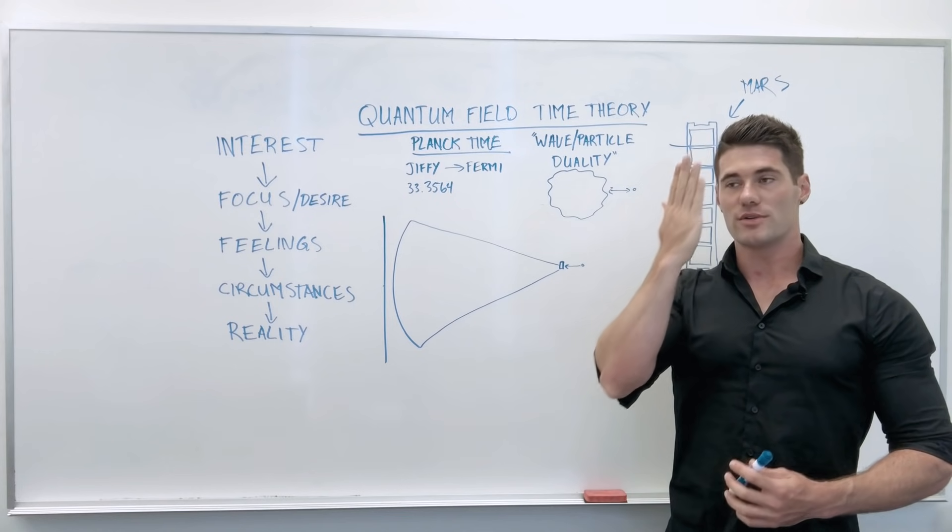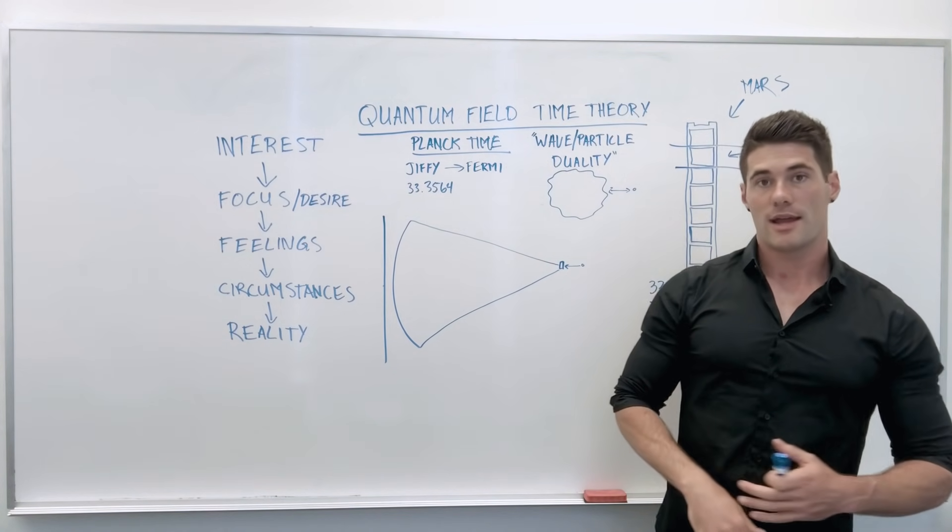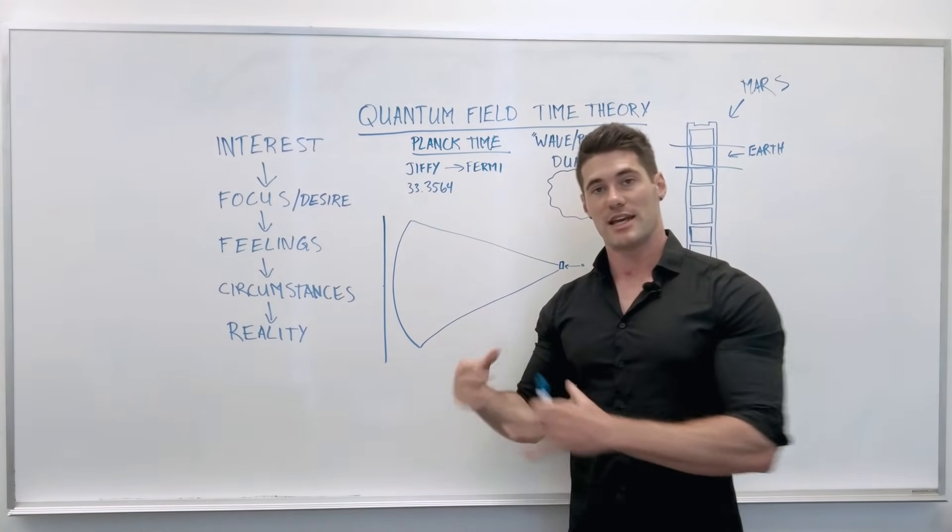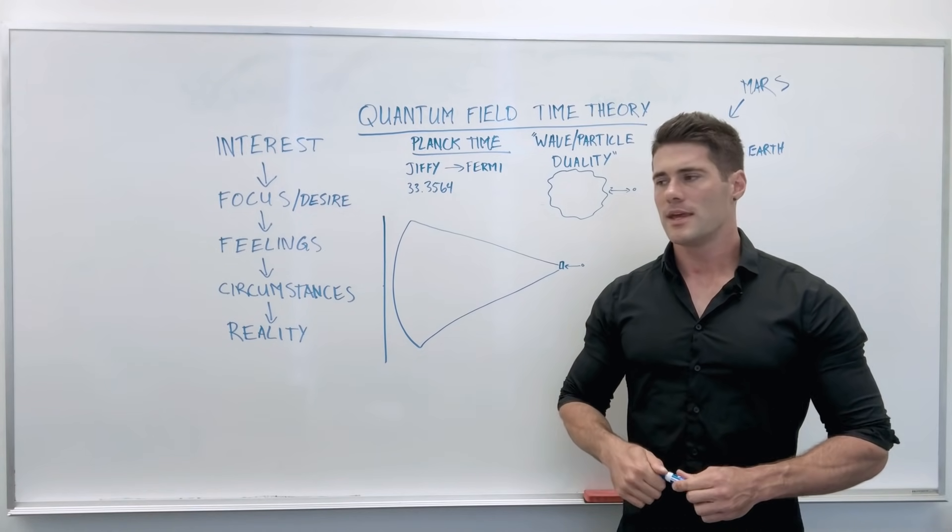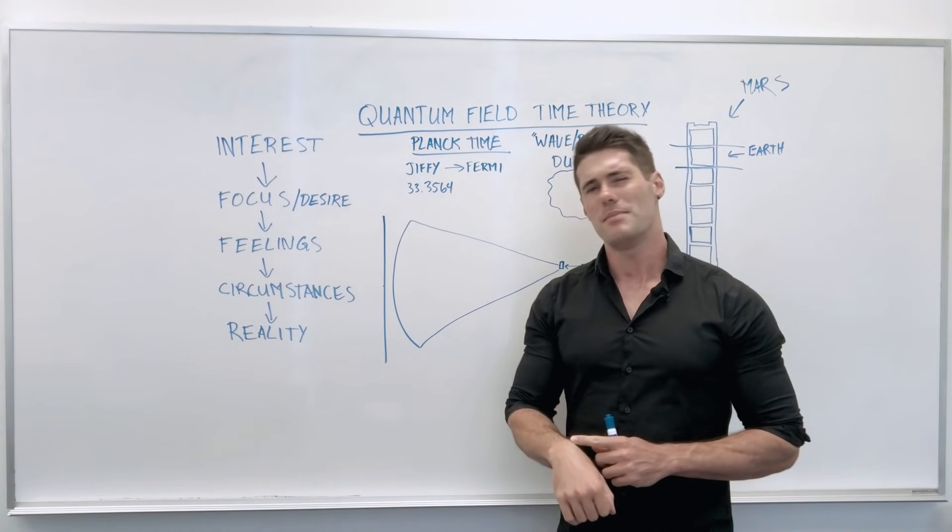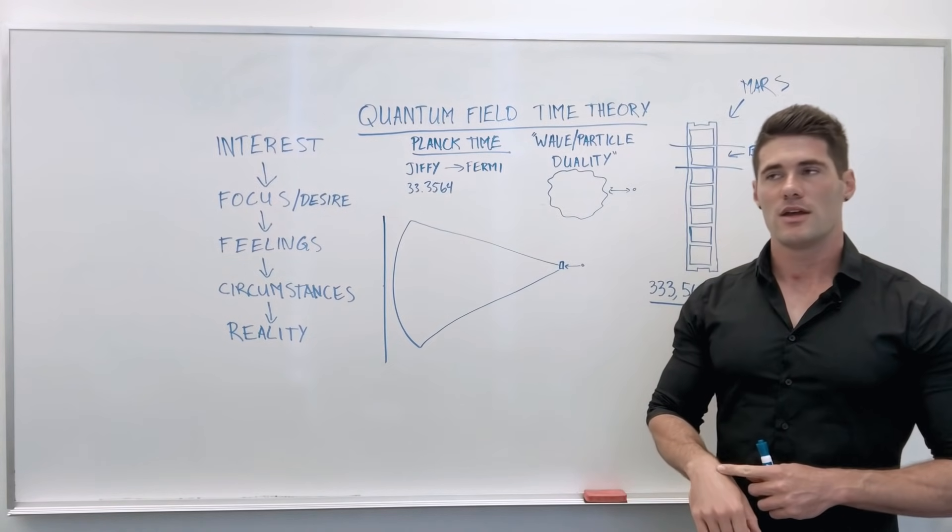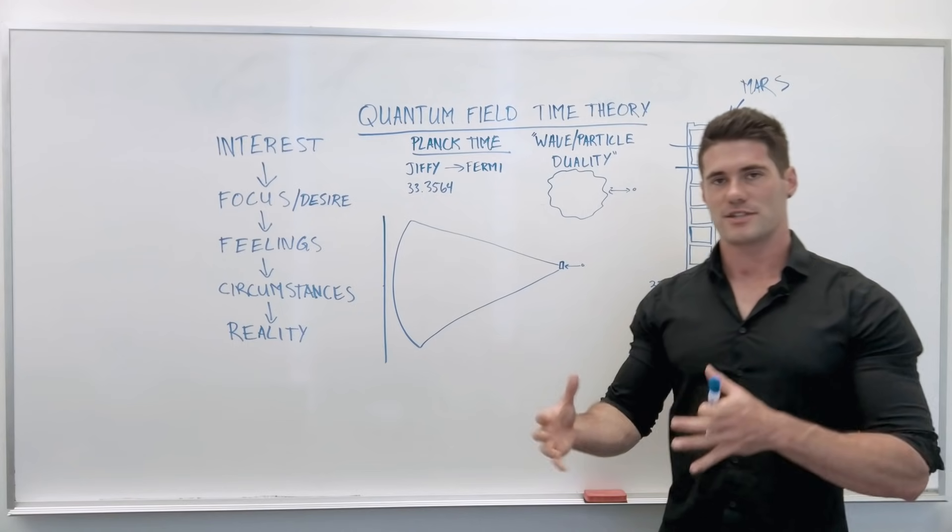He thought to himself, what would happen if I was going the speed of light and looking at that clock? He realized that the clock would appear to be standing still, because the frame, the jiffy that's traveling the speed of light, is going the same speed he's going. So he's stuck viewing one frame now. The more you slow down, the faster time appears to go, which is why astronauts in the space station, when they come back to Earth, everyone else has aged faster than they have.